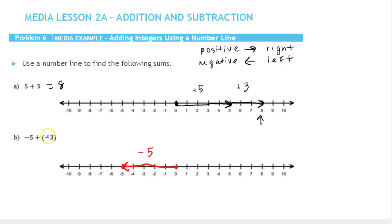Now we're going to move another 3 to the left. Our sum, or end result, is where we end up after we combine these two amounts. And notice we get negative 8.